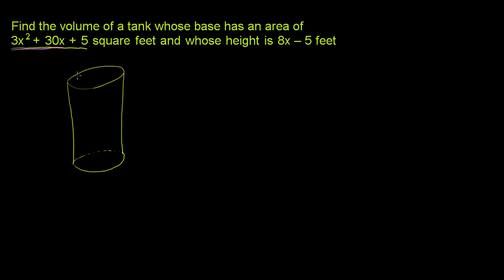And the volume of a, let me just label it first. So the area of the base, which is the same as the area of the top here or of the base here. The area of that is 3x squared plus 30x plus 5. And they tell us the height is 8x minus 5. The height of this tank is 8x minus 5.